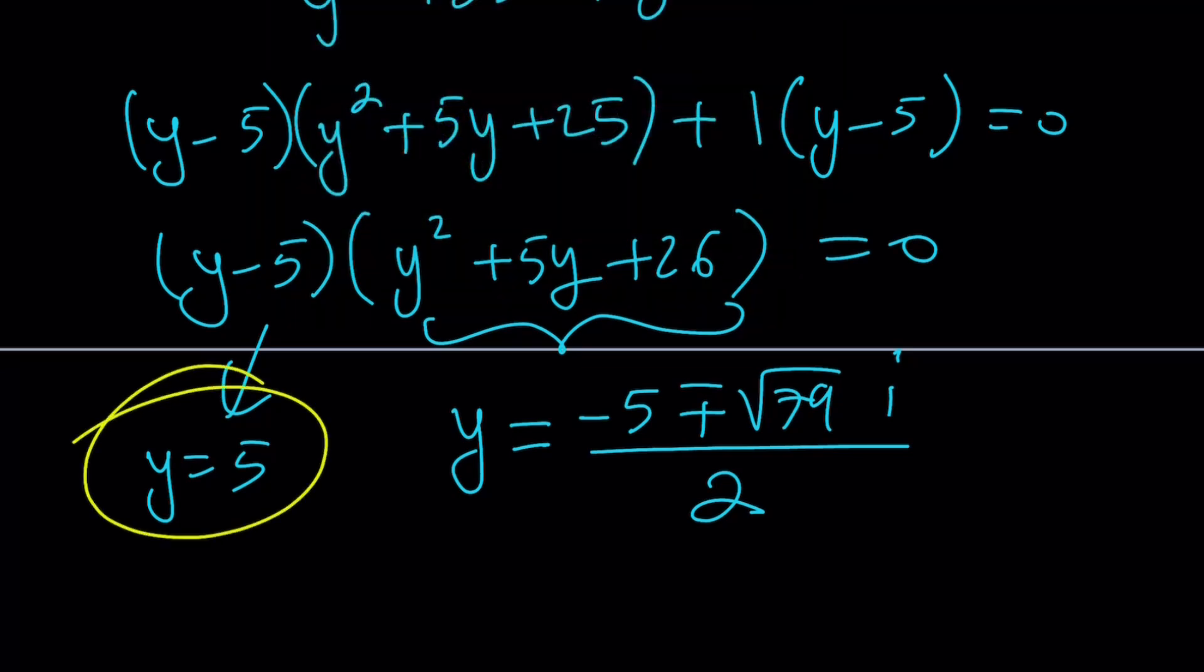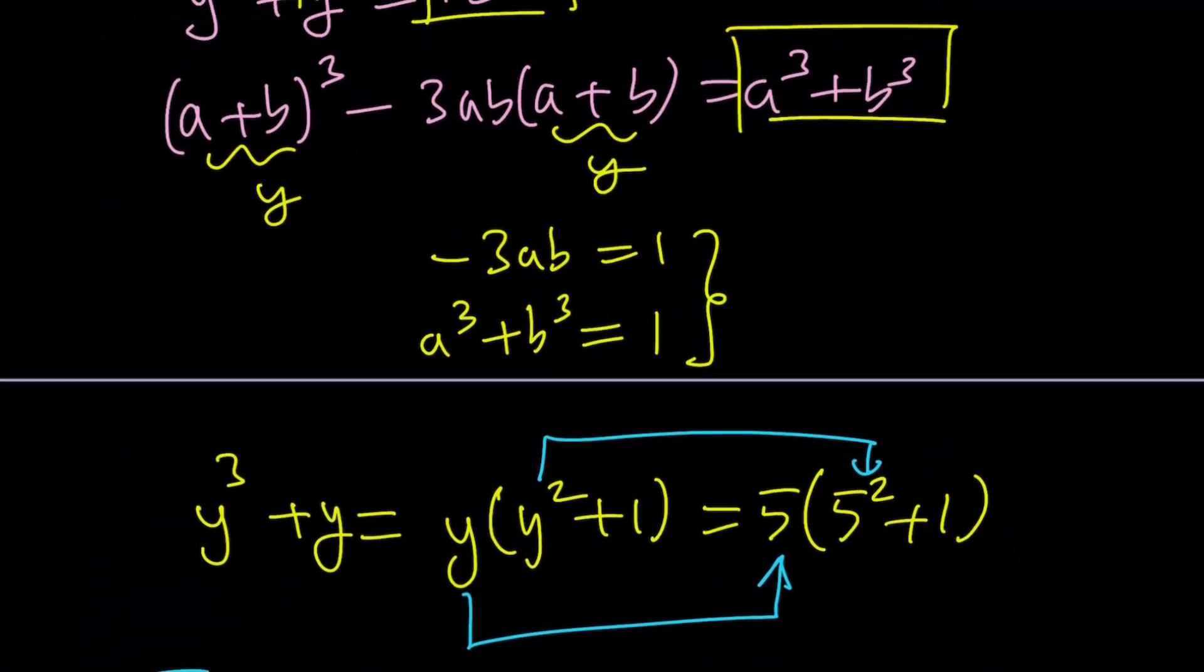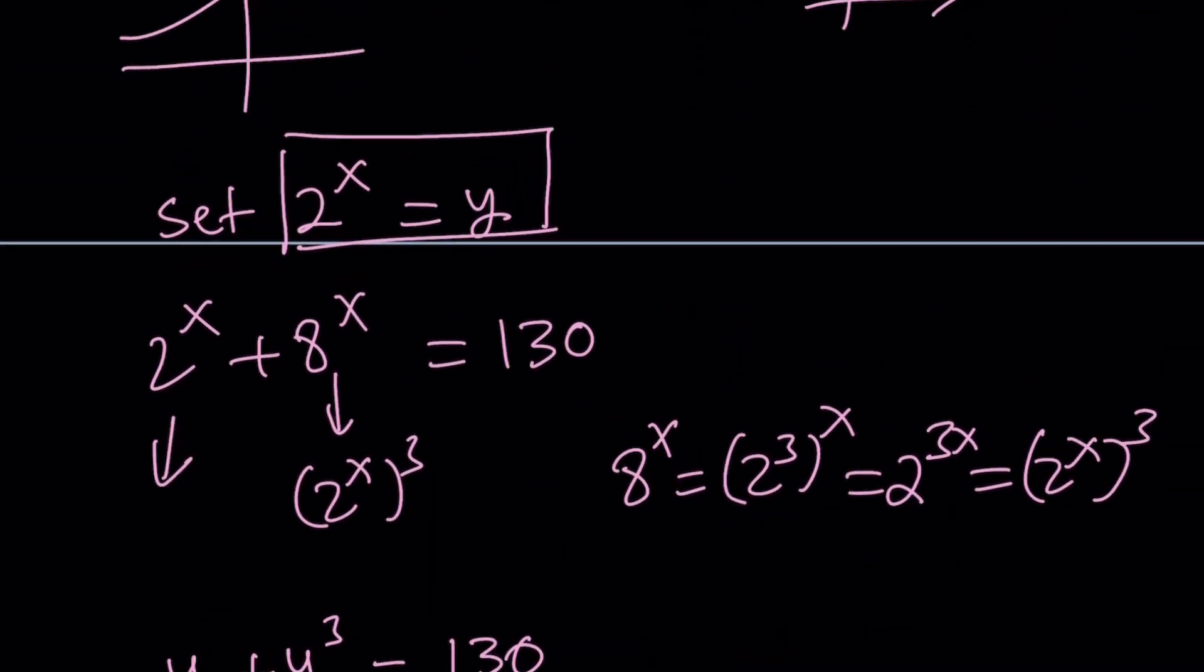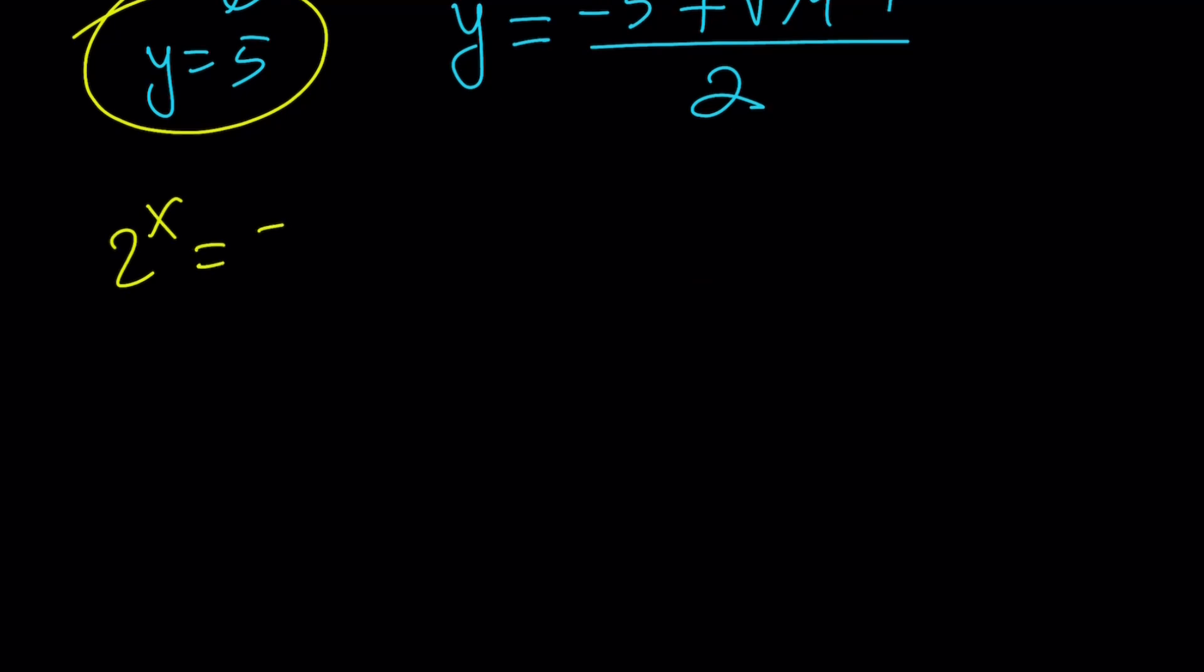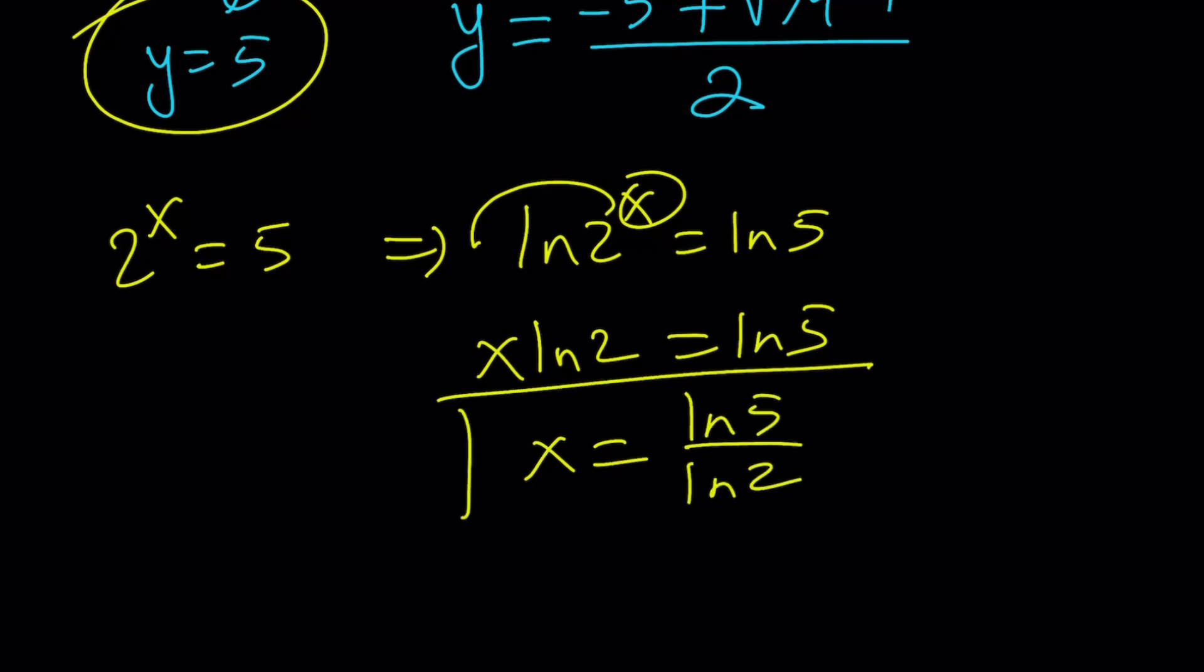So, y equals 5 means what? We said that 2 to the power x equals y. So, let's go ahead and back substitute. 2 to the power x equals 5. If you ln both sides, ln 2 to the x equals ln 5. Move the x. x ln 2 equals ln 5. Then from here x is going to be ln 5 over ln 2. Easy. This is the real deal.